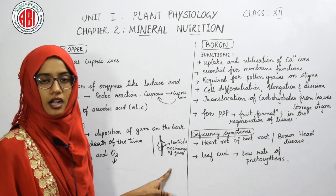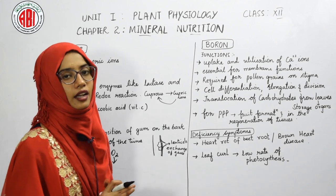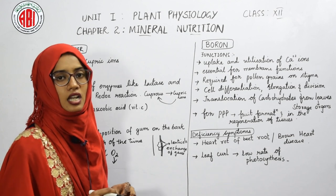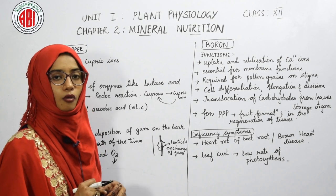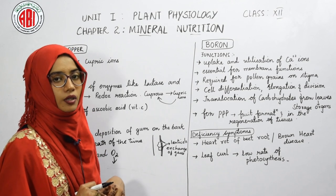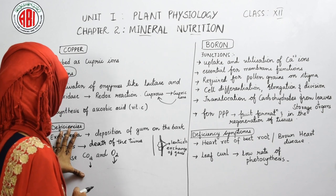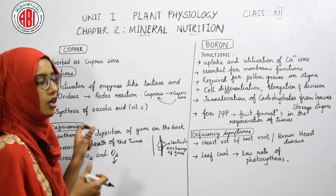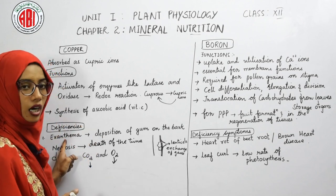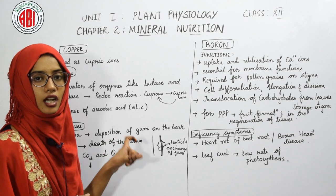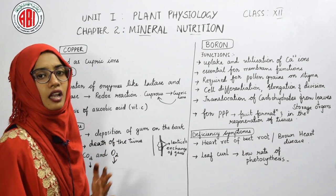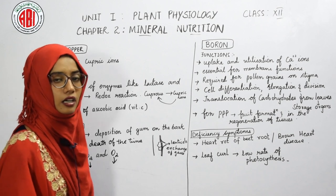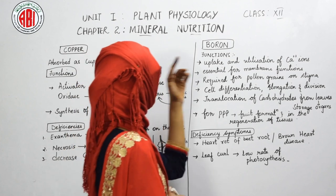When carbon dioxide and oxygen decrease in the plant, it becomes very difficult to carry out certain processes needed to keep the plant alive. The significant deficiency symptom of copper is exanthema, where gum deposition blocks the lenticels, stops gaseous exchange, and causes necrosis of plant tissues.